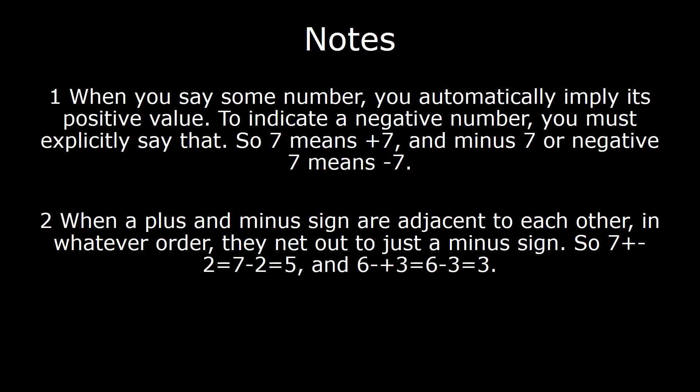For starters, I want to note a couple of basic things. Firstly, when you say a number, by default you refer to the positive value of that number. So if I say 7, I mean plus 7, because positive numbers are just used more commonly, so this is convention. However, for negative numbers, you need to say minus 5, minus 6, so as to indicate the negative counterpart of that value.